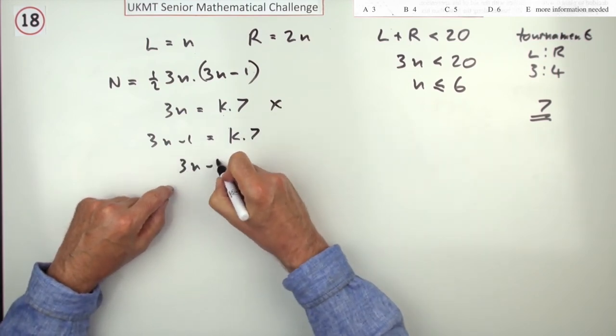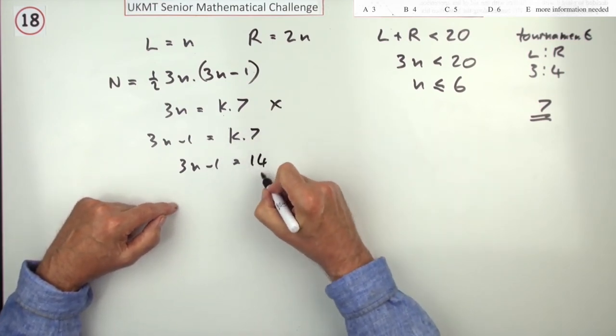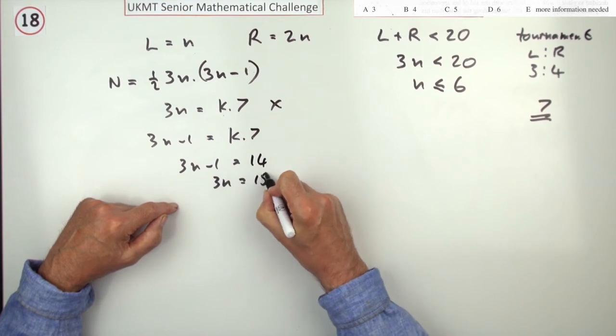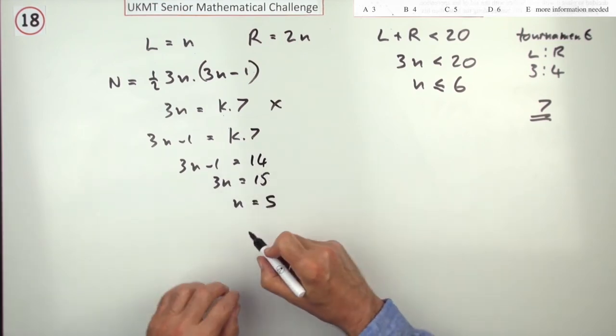So that means that 3N minus 1 is either 1 lot of 7, or 2 lots of 7, or 3 lots of 7, but 1 lot of 7 is no use, but 2 lots of 7 is. That makes 3N equal to 15, which makes N equal to 5. So the answer is C.